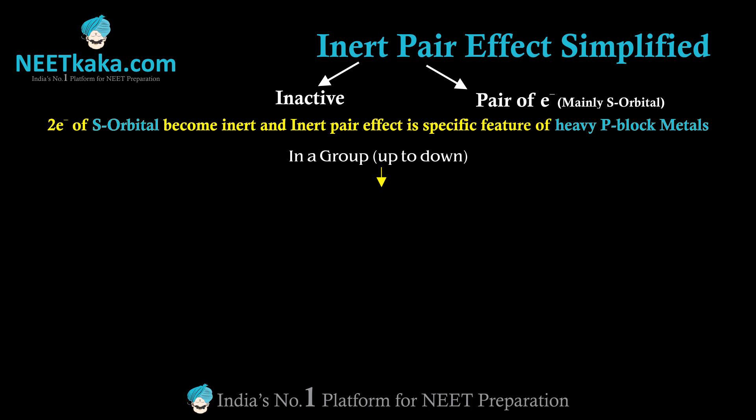In Group 14 — carbon, silicon, germanium, tin, lead — as we move down the group, atomic size increases. As atomic size increases, bonds formed by these atoms have longer bond lengths. So on moving down the group, atomic size increases and bond length increases.